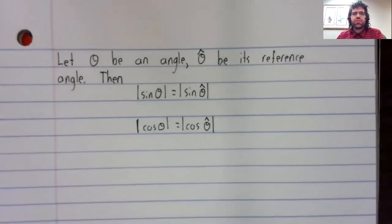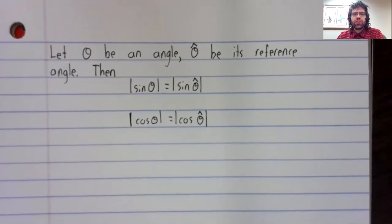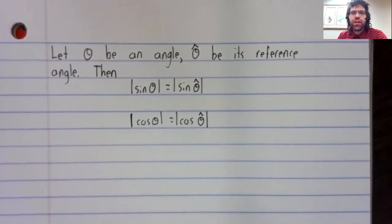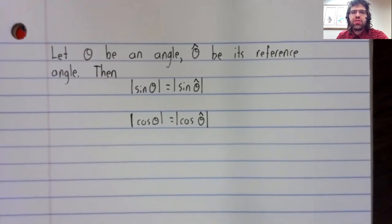Given an angle, the sine and the cosine of the angle and the sine and the cosine of the reference angle are closely related. In fact, they're identical, except that one of them might be positive, while the other is negative, or vice versa.